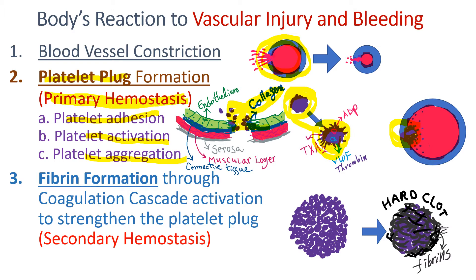However, the platelet plug formed through primary hemostasis is not strong enough. So fibrin is formed through the coagulation cascade to strengthen the platelet plug. This is called secondary hemostasis.